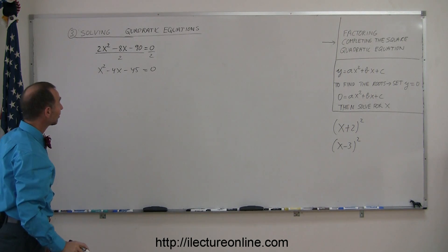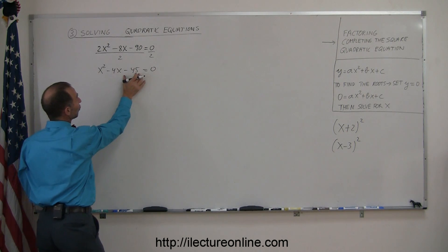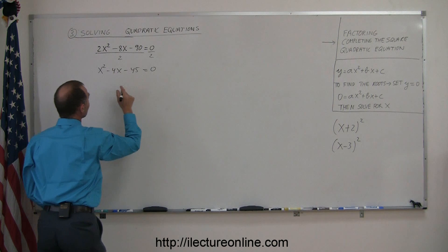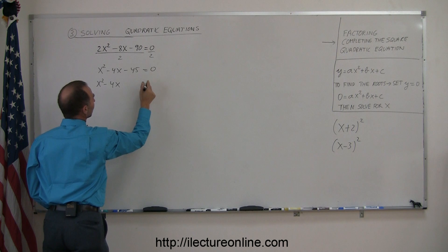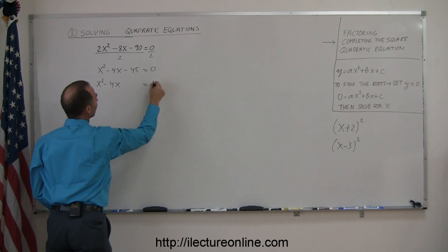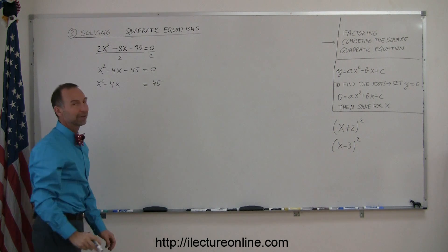The next step is to move the constant term to the right side of the equation. So we get x squared minus 4x, and then the constant moves across, becoming positive 45 on the right side.